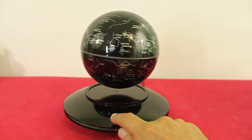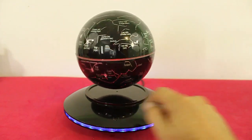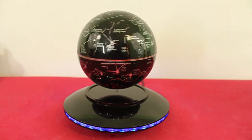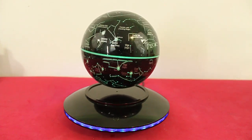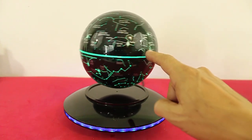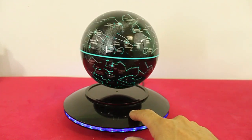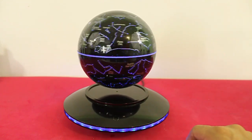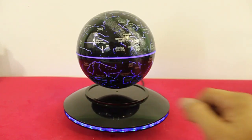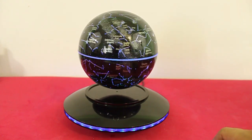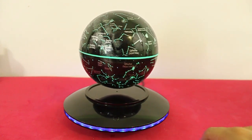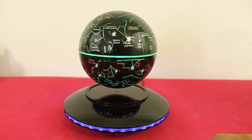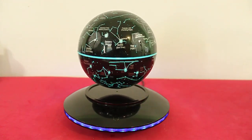There is a button here. You can have illumination on the globe. The light inside the globe gets its energy from the base and it is transmitted wirelessly. Electromagnetic induction is used to transmit the power from the base to the globe.